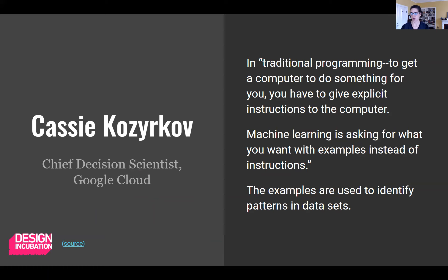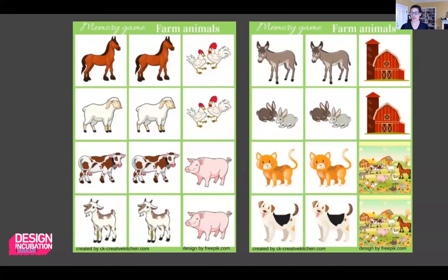Machine learning means asking for what you want with examples instead of giving the computer explicit instructions like in traditional computer science. I liken it to the memory games we played as kids. You show the computer a picture of a horse and it labels it as a horse or something else. You do this across a large bunch of pictures, and you tell the computer if it's right or wrong. It learns from your scoring of its answers, what a horse is versus the other things in your photo data set.